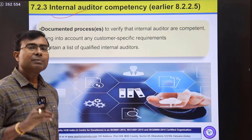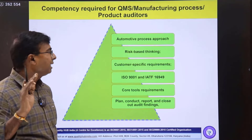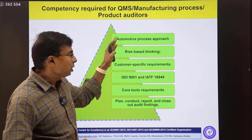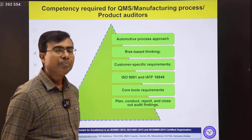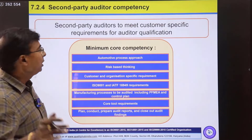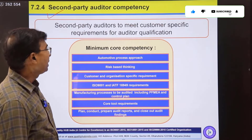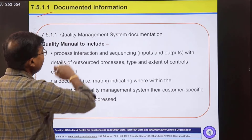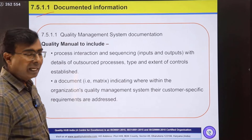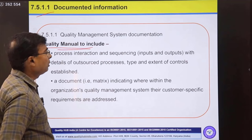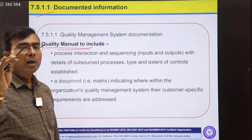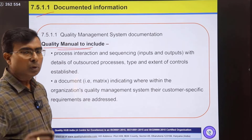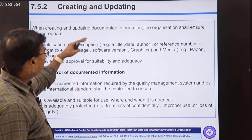Sub-clause 7.2.3 talks about internal auditor competency — IATF provides very detailed requirements for an internal auditor, unlike 9001's generic requirement. 7.2.4 covers second-party auditor competency, i.e., supplier auditor requirements. 7.5.1.1 talks about how documentation should look, and also requires having a quality manual — which is mandatory for IATF 16949 but not for 9001. Requirements cover how to manage documents, keep records, and control documented information.